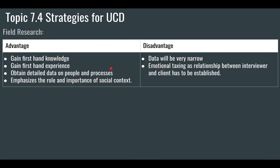Here are some advantages and disadvantages of field research, which the IB wants you to be able to understand. They want you to conceptually understand the advantages and disadvantages of each strategy for gathering user-centered data. Field research gives you firsthand knowledge — you're watching in a real setting what's happening. You're going to obtain detailed data on people and processes, and it really emphasizes the role and importance of the user's environment, where they will naturally be using the products or where the need is naturally expressed.